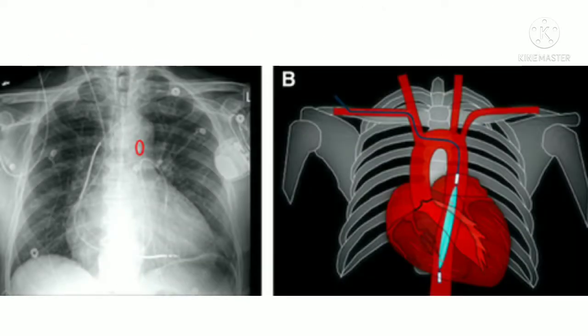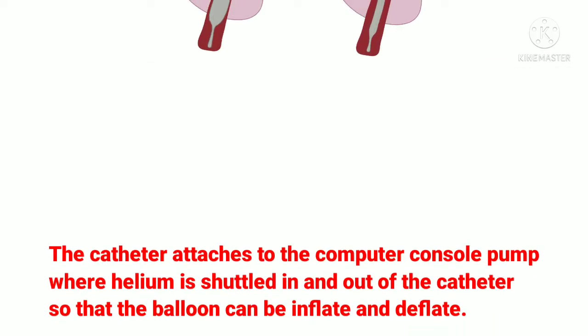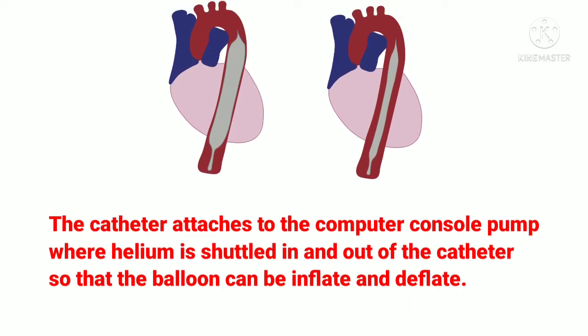The catheter tip is radio-opaque, so its position can be visualized on X-ray film. The catheter is attached to the computer console pump where helium is shuttled in and out of the catheter so that the balloon can be inflated and deflated.